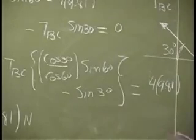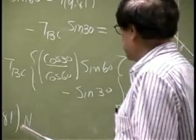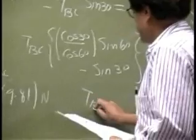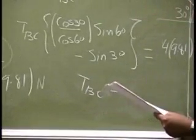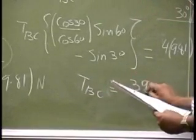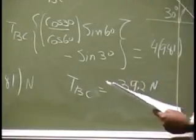And from that equation, you should be able to find the value for TBC and that comes out to be roughly 39.2 newtons.